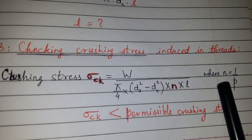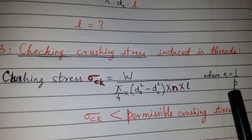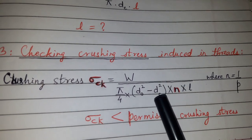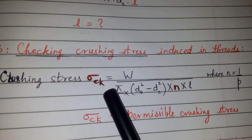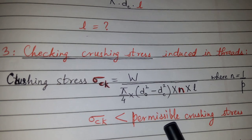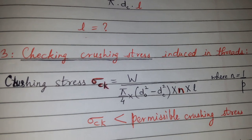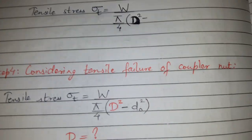The load is given, and the affected area is (π/4)(D0² - DC²) × N × L, where N is 1 upon the pitch. You can find N and put here. Once you get the value of crushing stress, we have to see whether it is less than the permissible crushing stress which is given in the problem.